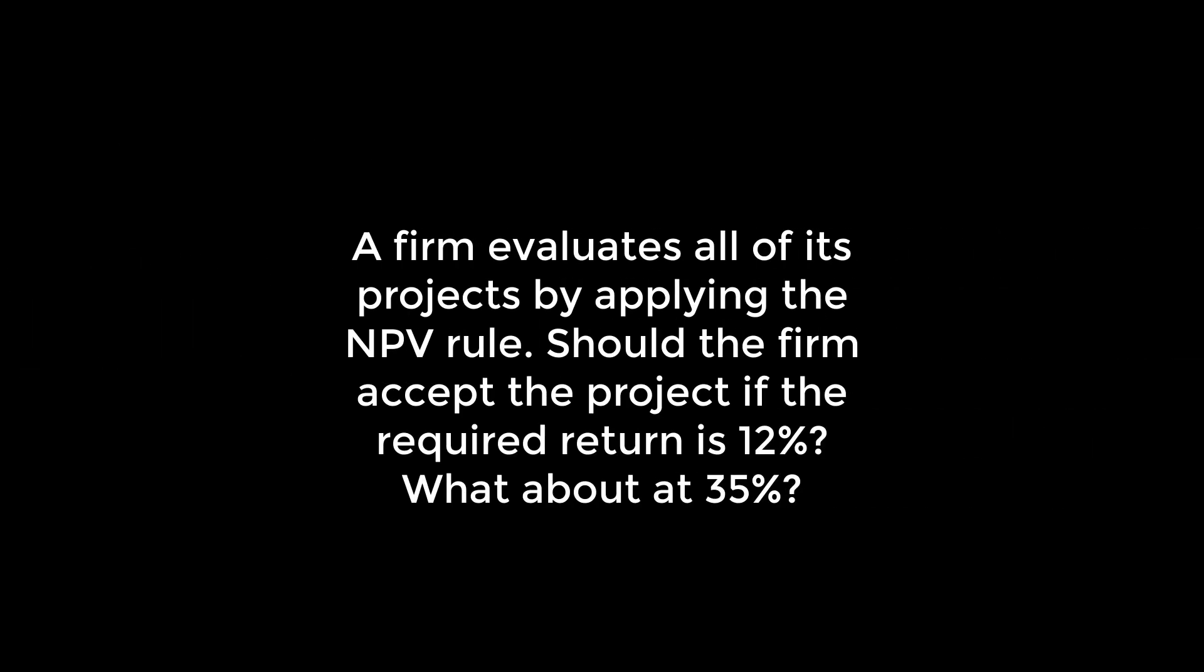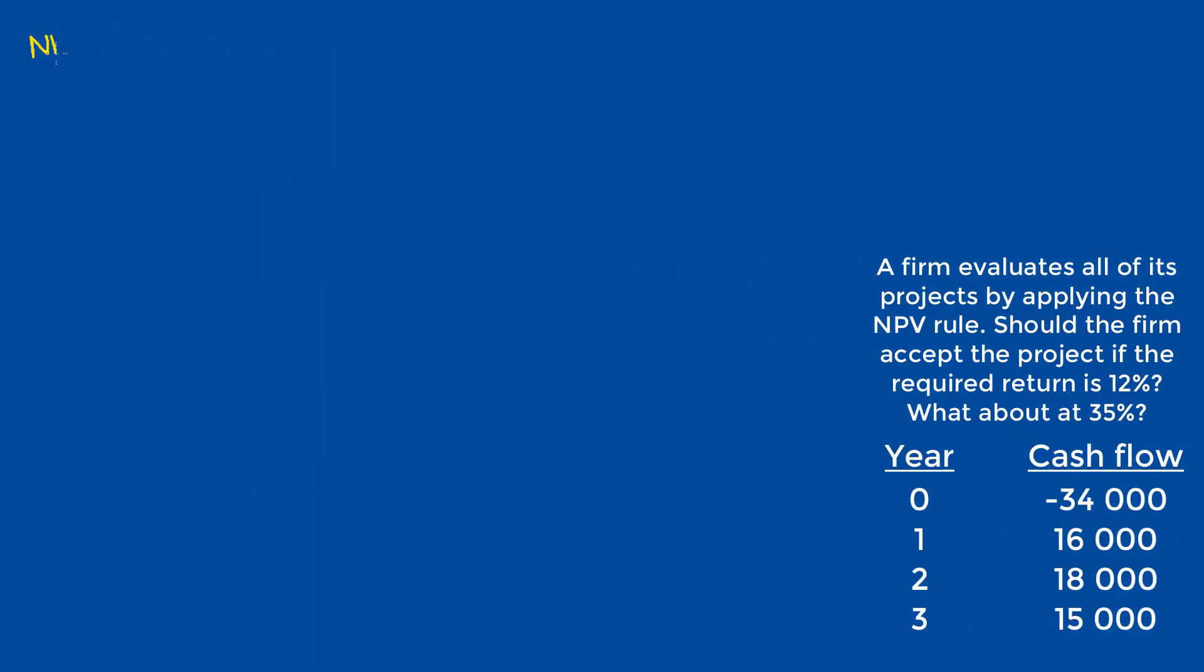A firm evaluates all of its projects by applying the NPV rule. Should the firm accept the project if the required return is 12%? What about 35%? We begin by restating that our formula for NPV is negative cost plus the present value of all future cash flows, which we're going to abbreviate as CFs. Looking at our chart, the cost is given as negative $34,000, or the initial outlay is negative $34,000.